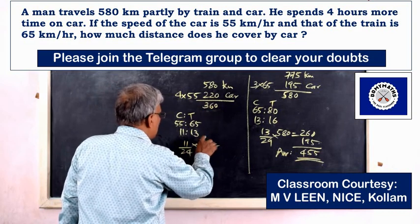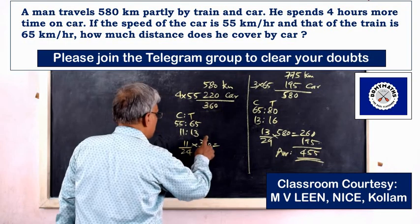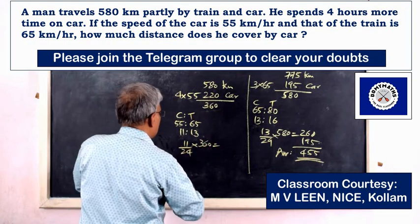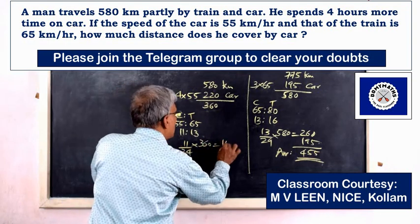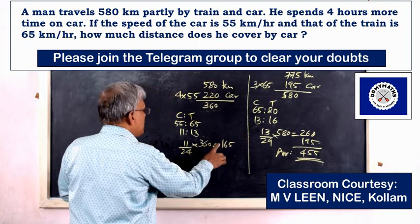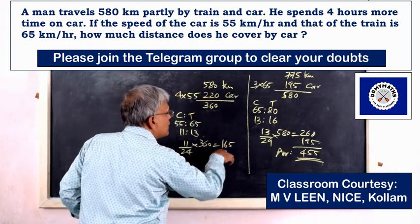15 into 11 equals 165. Then 360 minus 165 equals the remaining distance.